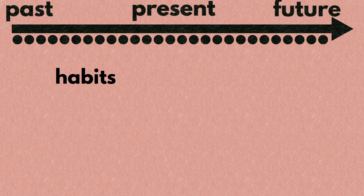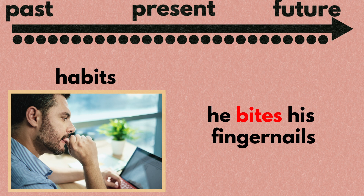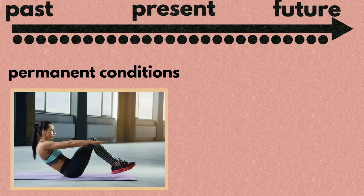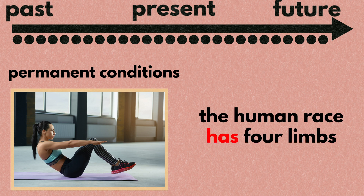Another instance is someone's habit. Habits are what someone frequently did in the past, does now, and will frequently do in the future, so use the simple present tense, as in he bites his fingernails. One more instance is the permanent conditions of someone or something — for instance, the human race has four limbs. For more information, check out the video on the simple present tense.